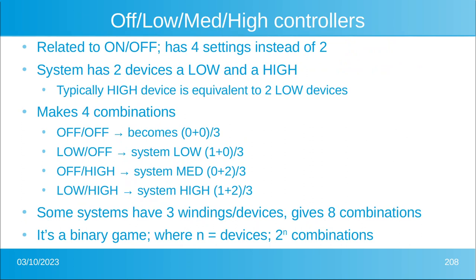Related to on/off controllers are controllers that offer off, low, medium, and high — essentially the same concept but with four settings instead of two. The system has two devices: a low and a high, where the high is equivalent to two lows — very binary. With two devices you get four combinations; with three devices you get eight. In general, if you have n devices you get 2-to-the-n combinations.